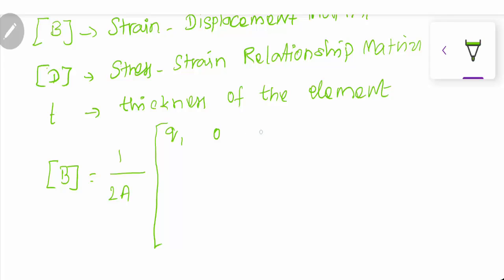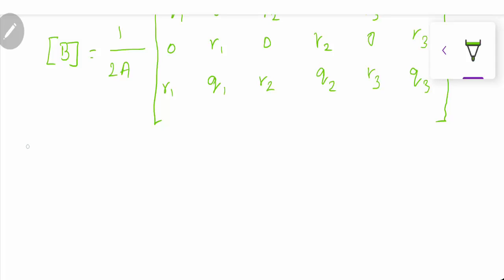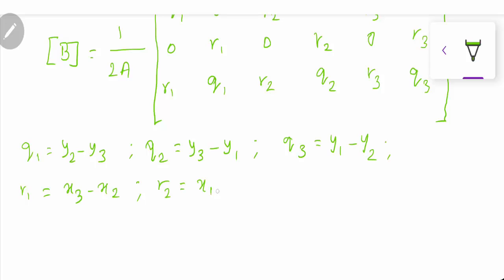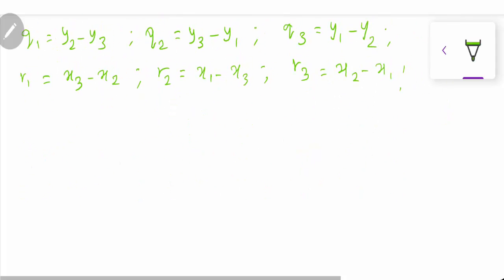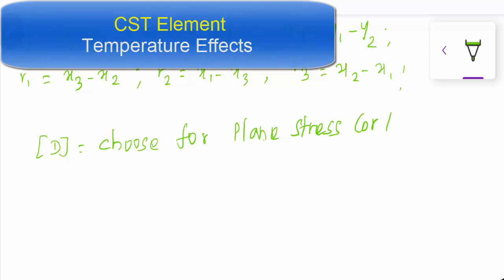Remember the formulas: q1 = y2−y3, q2 = y3−y1, q3 = y1−y2; r1 = x3−x2, r2 = x1−x3, r3 = x2−x1. The D matrix changes depending on whether it is a plane stress or plane strain element, but the strain displacement matrix B never changes for any type of element.